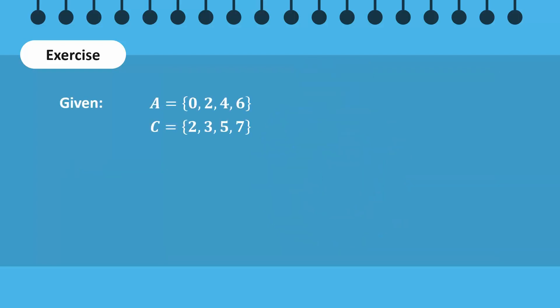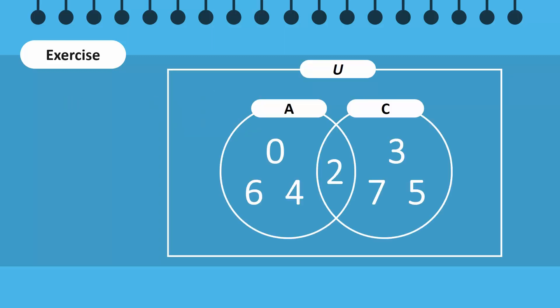Next, observe that sets A and C have one element in common, which is 2. Neither set is a subset of the other. Therefore, A and C are overlapping sets. A difference C will contain elements that are in set A but not in set C. Hence, the region containing the elements 0, 4, and 6 is shaded.